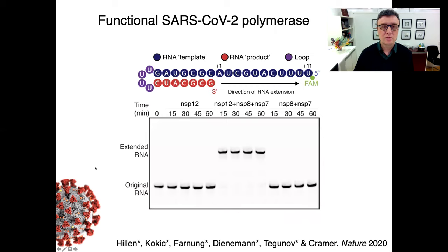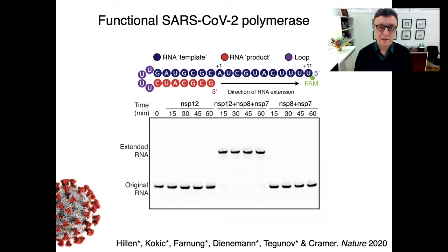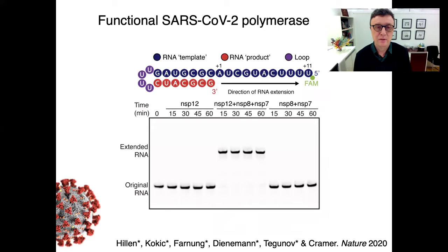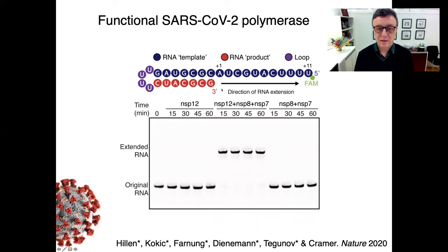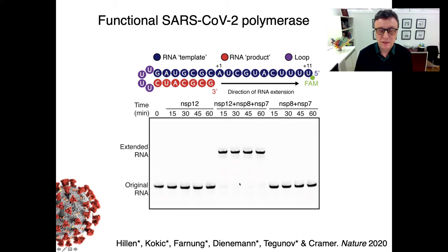So in order to do our research we had to start with making the coronavirus RNA polymerase. Once we had achieved this and had protein in hand, we had to show that the polymerase is functional in biochemical assays. This is the assay we used, where we made a synthetic RNA that can be extended by the viral polymerase from the 3-prime end, and here you can see the extension of the RNA.